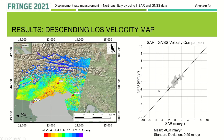We obtained a similar product for the descending dataset — again, the comparison between the SAR and GNSS velocity showing a general good agreement, and on the left the map showing the displacement in line of sight.